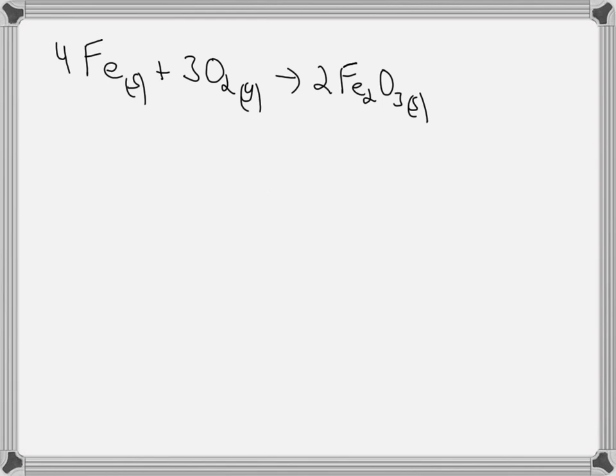So to calculate delta S standard, we'll start with 2 times the standard entropy of iron 3 oxide. And in the table that I have, iron 3 oxide entropy is 90 joules per mole Kelvin.